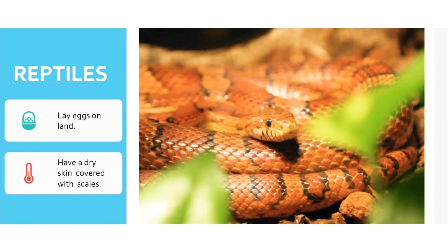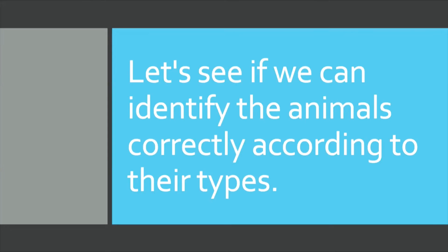Some reptiles, like the crocodile and the turtle, can move or live both in water and on land, but they lay eggs on land and have a dry skin covered with scales — and hence they are reptiles. Now let's see if we can identify the animals correctly according to their types.